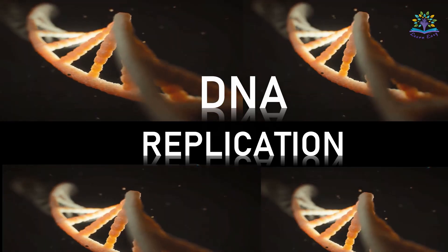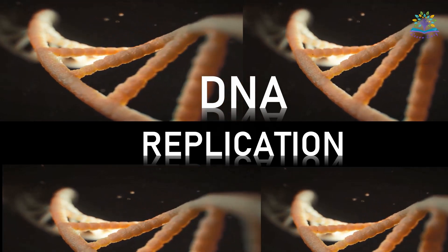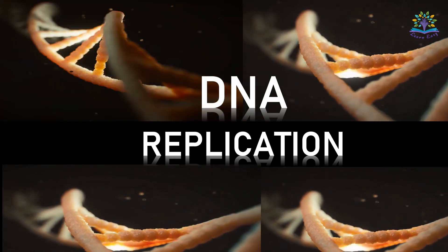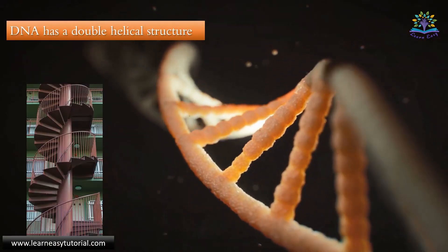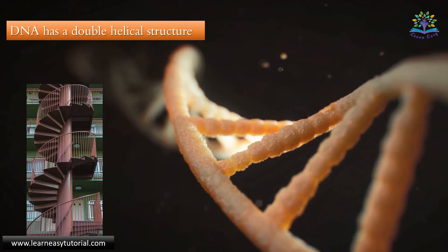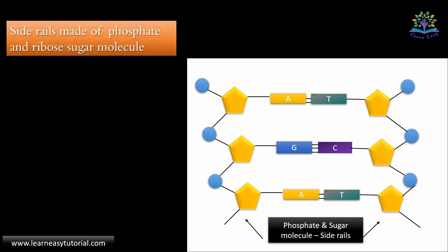Hey there, in this video we are going to learn about the various steps involved in DNA replication process. Let's have a quick recap of the DNA structure. DNA has a double helical structure. The side rails are made up of phosphate and ribose sugar molecules.